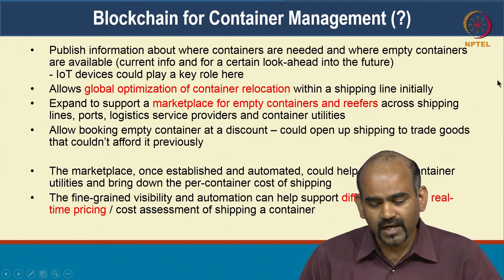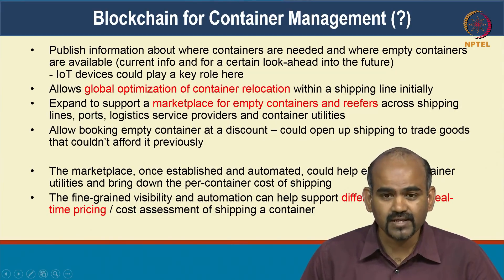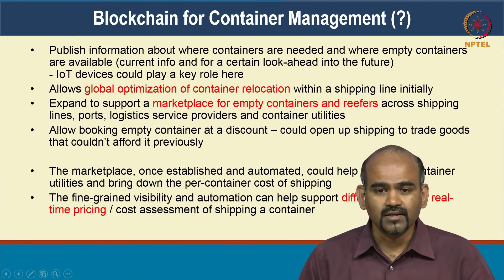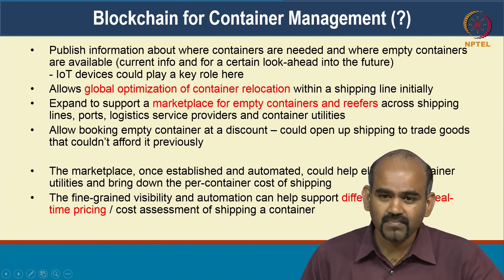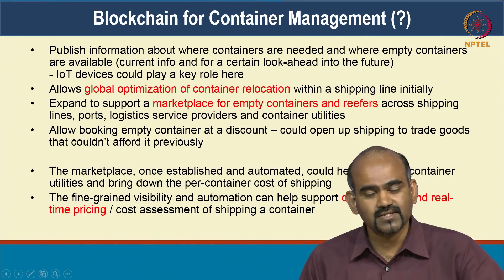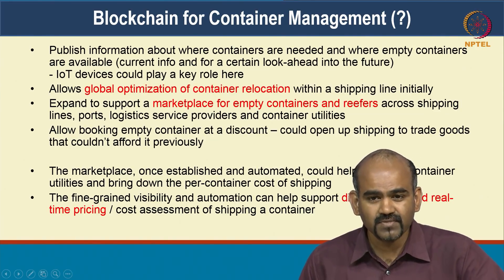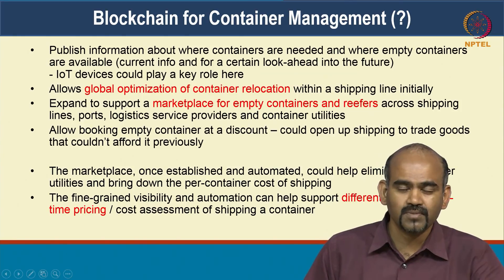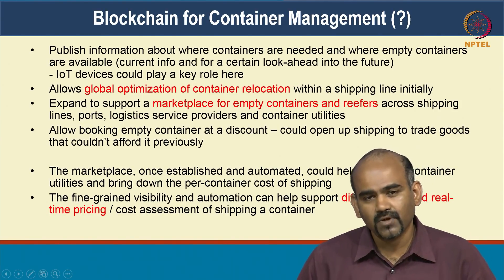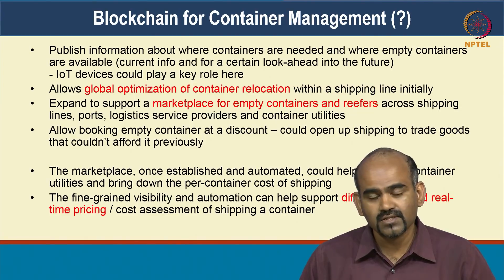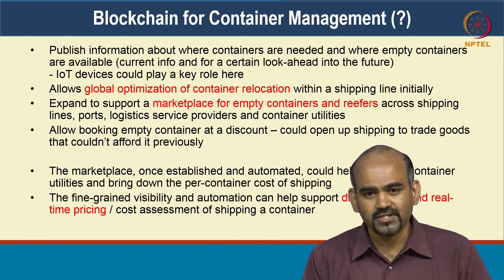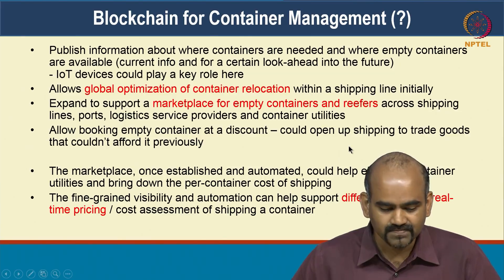Just having that availability of these things known in advance can help optimize this overall complex problem. We can take local optimization to global optimization if people come and share this information on a blockchain platform — building a marketplace for empty containers and reefers. Once you have something like this, you can also look at differentiated pricing based on supply and demand: large supply brings the price down, large demand shoots the price up, helping optimize this overall problem and bring down costs for shipping lines.